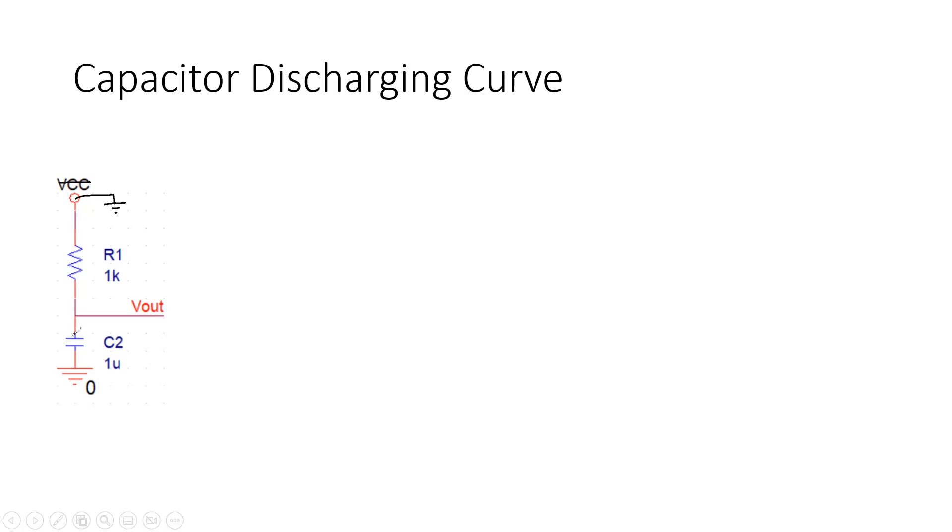Suppose our capacitor is fully charged to a certain voltage. Now we disconnect this from VCC and connect it to ground. Now there's a path to discharge the capacitor. For that also we can write the relationship just like the previous case.